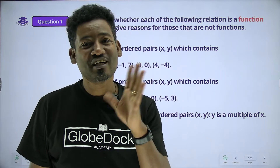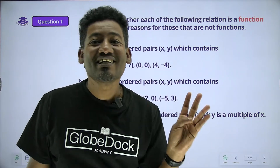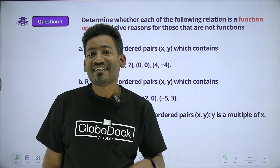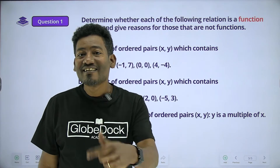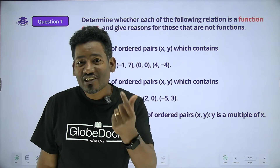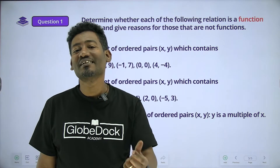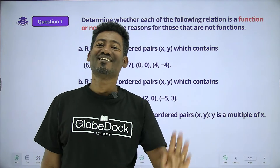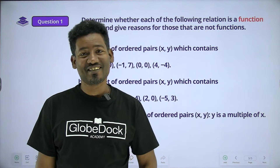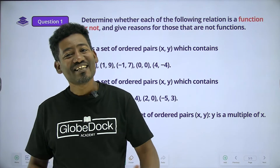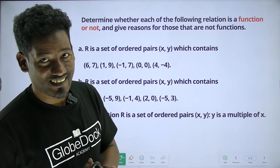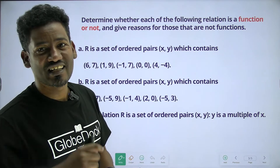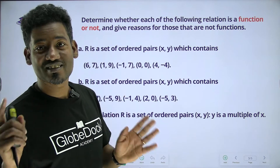A relation is a combination. If you have a function, you can see the criteria. You can see the relation of the element — it is a relation to the relation.